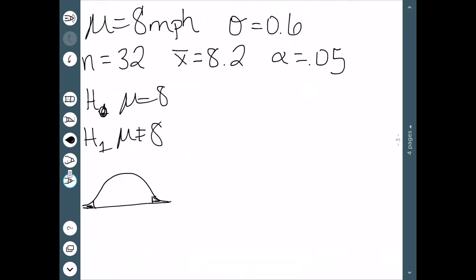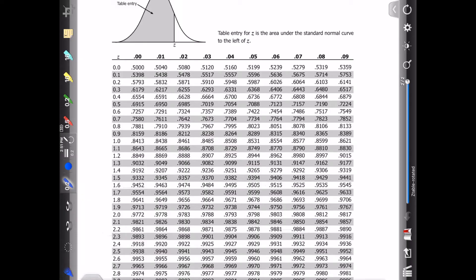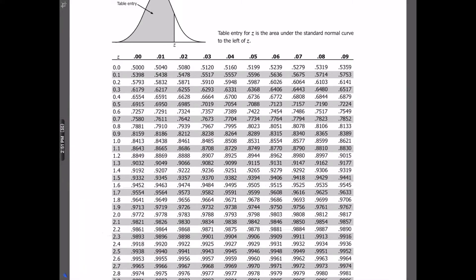My test value is x-bar minus mu over sigma divided by the square root of n. And we can work this out. When we do, we get 1.89. So we need to look up 1.89 in our z-table. Looking at our z-table, we go down to 1.8 over to 9, and that gets us .9706.